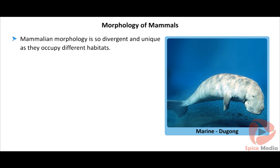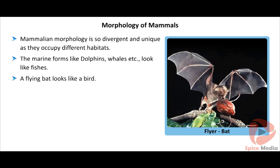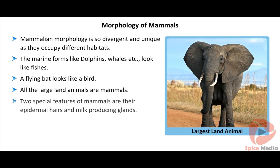Mammalian morphology is so divergent and special as they occupy different habitats. The marine forms like dolphins, whales, etc. look like fishes. A flying bat looks like a bird. The size of mammals is quite distinctive and all the large land animals are mammals. Mammals are distinguished from other vertebrates by two unique features: epidermal hairs and milk-producing mammary glands.